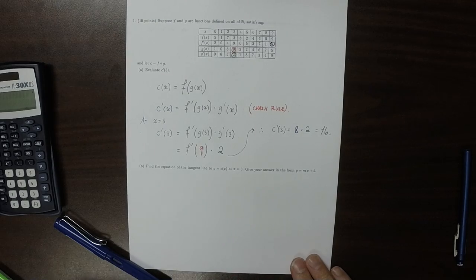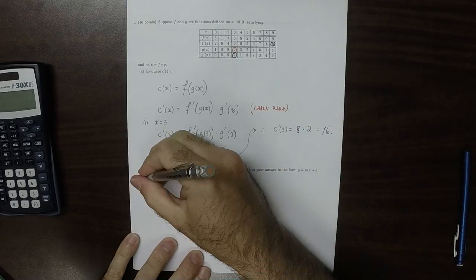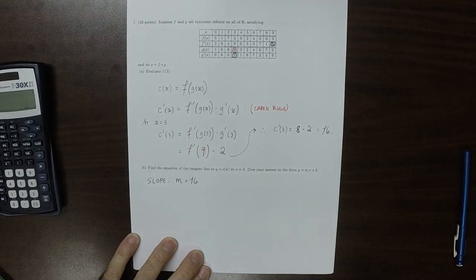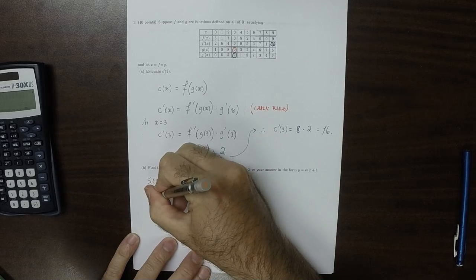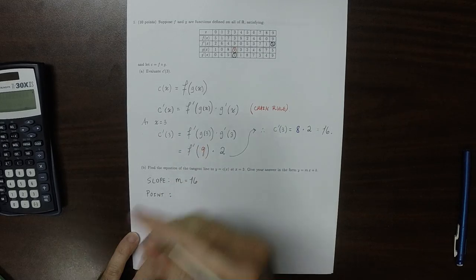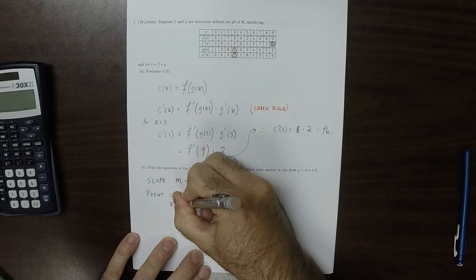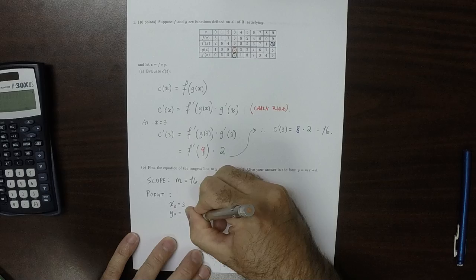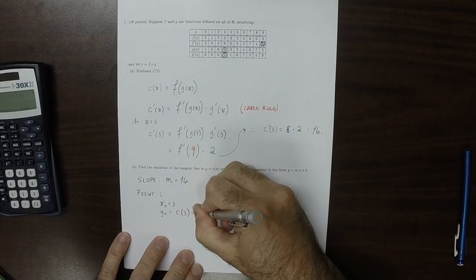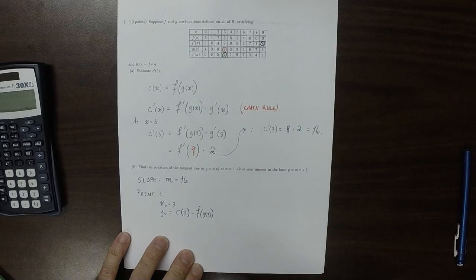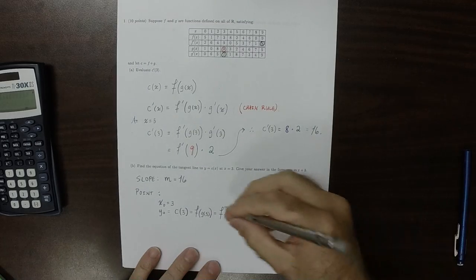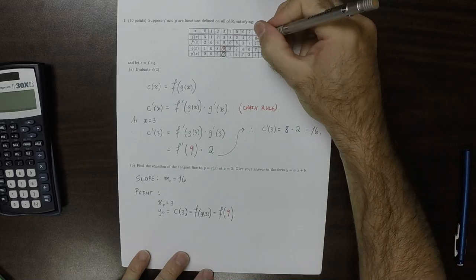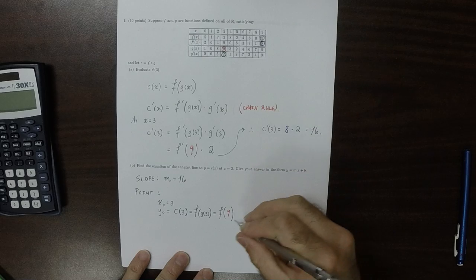Find the equation of the tangent line. We established in the previous part that the slope is 16. The point: we know x₀ is 3. y₀ will be c of 3. But c of 3 is f of g of 3. g of 3 is 9, and then f of 9 — this is the last lookup — f of 9 happens to be 9.